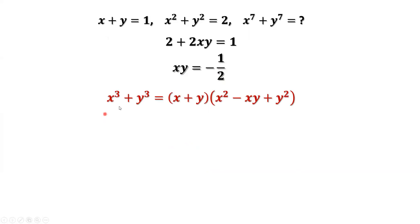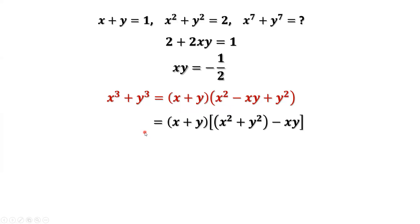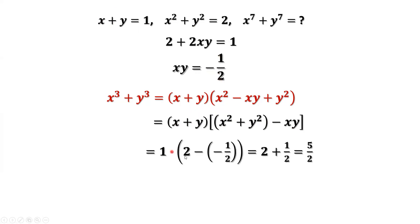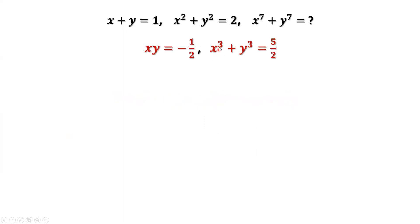Using the well-known formula: x to the power of 3 plus y to the power of 3 equals x plus y times x squared minus xy plus y squared. We substitute x plus y equals 1, x squared plus y squared equals 2, and xy equals negative one half. Simplifying gives x to the power of 3 plus y to the power of 3 equals 5 over 2.